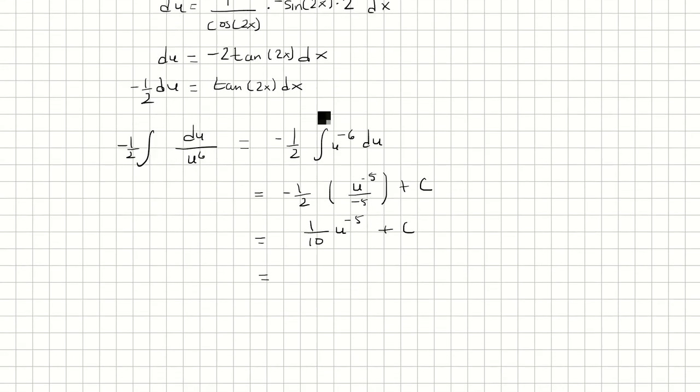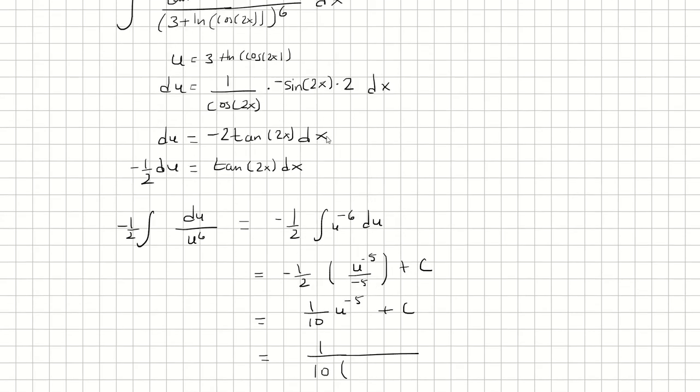And the u is going to go in the bottom, so we'll just write it like this. So it's 1 over 10 times 3 plus ln of cosine 2x raised to the 5th power, plus c.